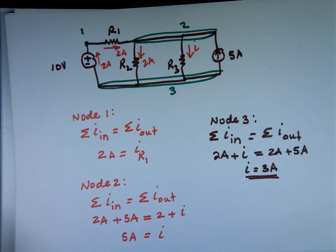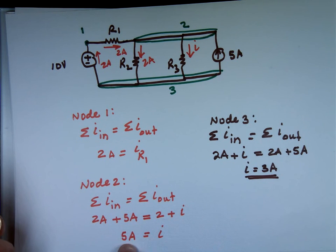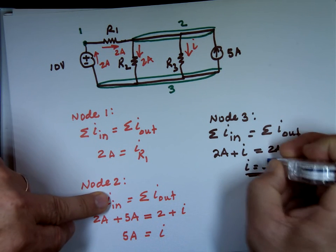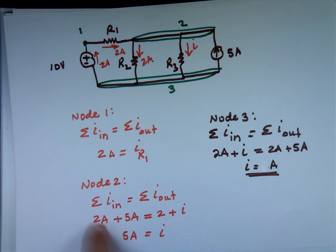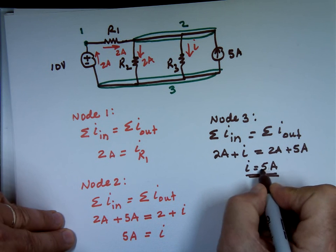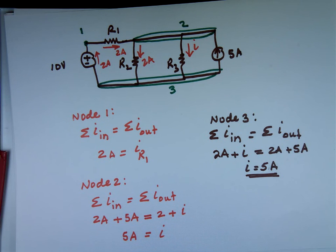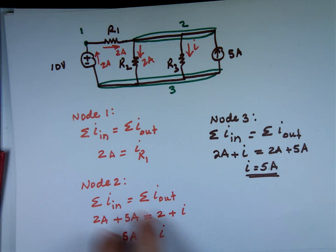I is 5 amps — 2 and 5 is 7, take away 2 that's 5. It doesn't matter which node you use; any way you slice it gives the same answer. That's Kirchhoff's Current Law.